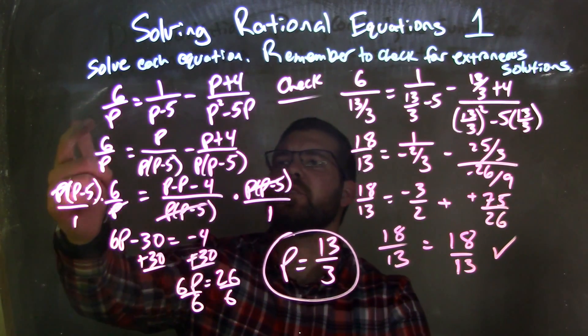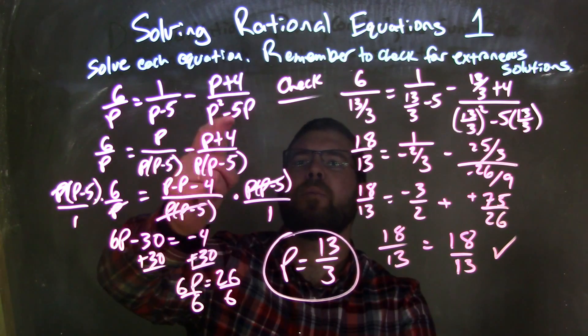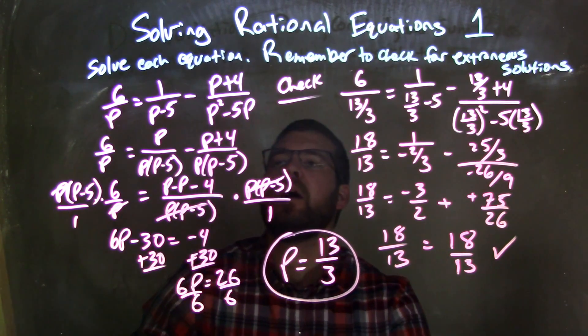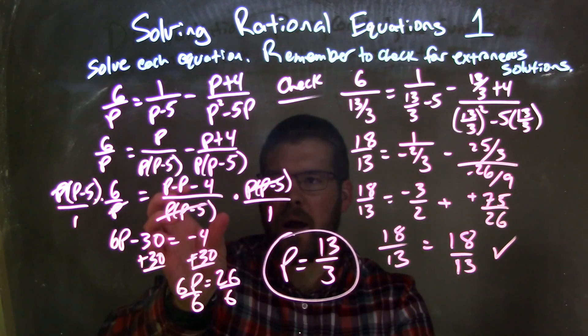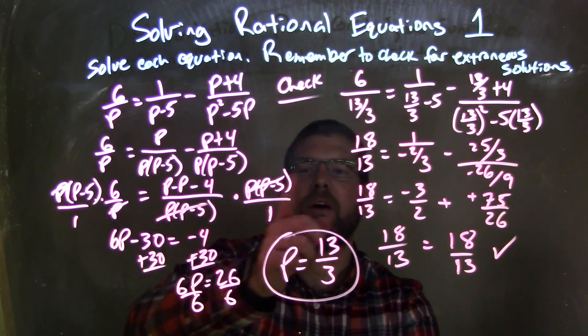So let's recap. We're given 6 over p equals 1 over p minus 5 minus p plus 4 over p squared minus 5 times p. What I did is found a common base, then I can combine them, and in doing so, since I combined them, I can now multiply p times p minus 5 to both sides.